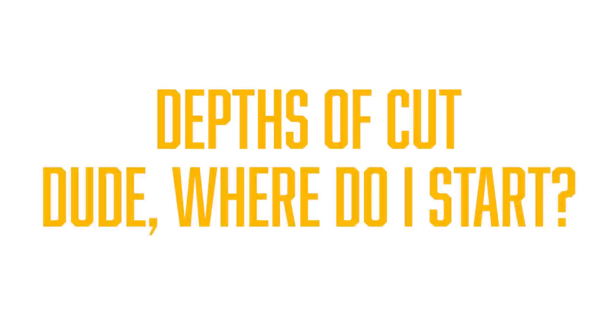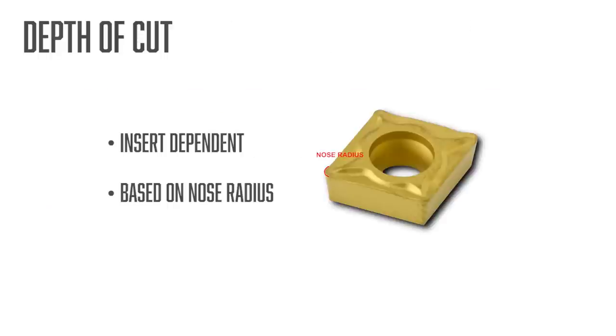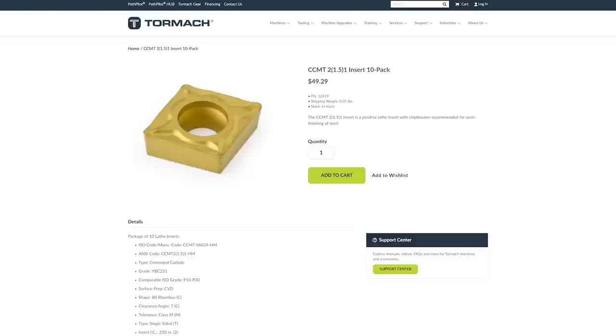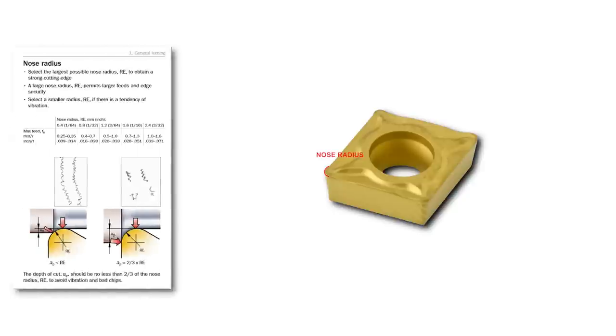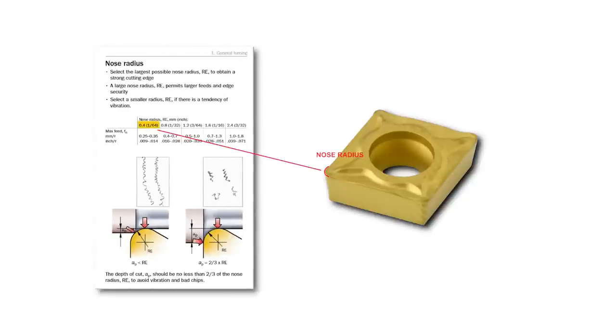Now we're going to talk about depths of cut and a good place to start. This is mostly insert dependent and based off the nose radius of the insert. We're using a CCMT2 1.51, which has a nose radius of 1.64, that's a little bit above 15 thou. To create a nice chip and ensure all the forces are going in the right direction, take a roughing depth of cut of at least one-half to two-thirds the nose radius. For finishing, it's okay to go a little bit lighter with about one-third the nose radius.